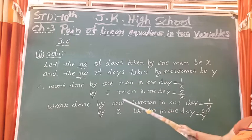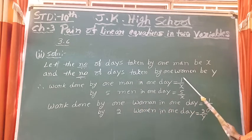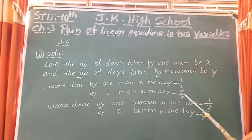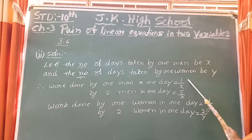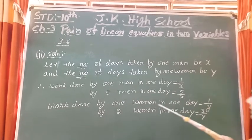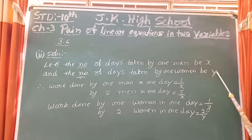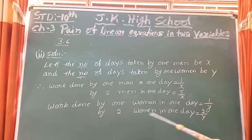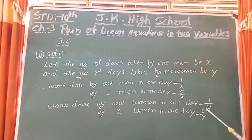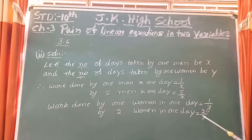There are 5 men, so work done by 5 men in one day is 5 by x. Similarly, work done by one woman in one day is 1 by y, and there are 2 women, so work done by 2 women in one day is 2 by y.